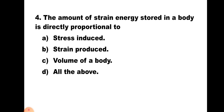Question number 4: The amount of strain energy stored in a body is directly proportional to — A. Stress induced, B. Strain produced, C. Volume of a body, D. All the above. The expression for strain energy is σ²·A·L / 2E. Splitting σ² as σ × σ, you get half × σ × (σ/E) × volume — where the first σ is stress, σ/E is strain, and the third term is volume. So strain energy is proportional to stress, strain, and volume. Hence, the correct answer is D. All the above.